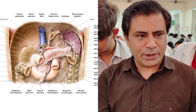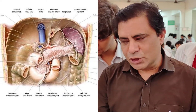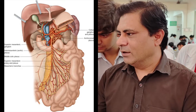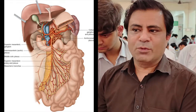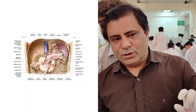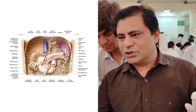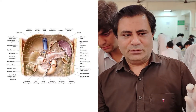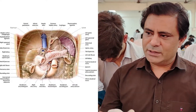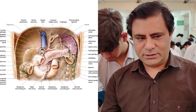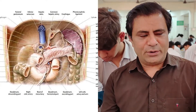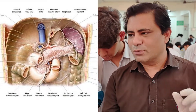The duodenum is retroperitoneal, while the jejunum and ileum carry a mesentery, so they are mobile. However, the most proximal and most distal portions of the duodenum — the first part and the fourth part — are also peritoneum-covered, so they are also mobile.